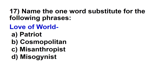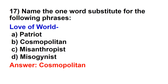Name the one word substitute for the following phrase: love of world. Options: patriot, cosmopolitan, misanthropist, misogynist. Here you can see two options having 'mis' — mis means a person who hates. So this is one trick to identify the right option. The right option is cosmopolitan.